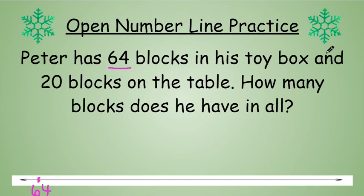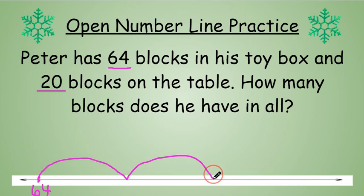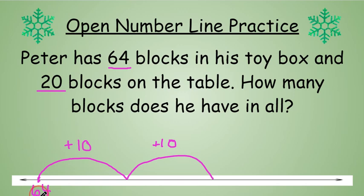Then I need to add 20 blocks. I know an easy way of doing that is counting by 10s — so here's 10, 20. Above those jumps we write plus 10 to keep track of our thinking. I know that when we add 10 more, we are changing the 10s place. So 64 will turn into 74, and then 74 plus 10, changing that 10s place, will turn into 84.